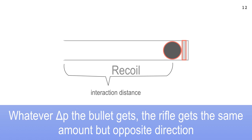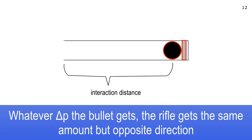A bunch of students in discussions were asking about problem number five. Here's the basic upshot: whatever delta P the bullet gets going rightward, the rifle is going to get the same leftward recoil delta P — same amount, opposite direction. Newton's Third Law: equal but opposite reaction. The equal stuff is the exchange of momentum, delta P. The delta P's are equal in size but opposite in direction.